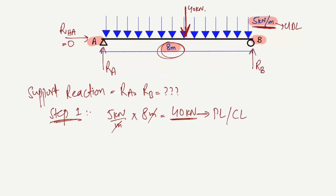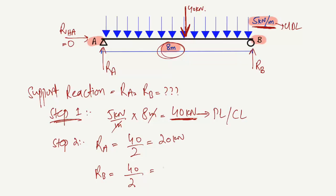In the second step, we simply divide this value by 2. So RA equals 40 divided by 2, which is 20 kN, and RB also equals 40 divided by 2, which is 20 kN. This means half of the total load is taken by support A and half is taken by support B.